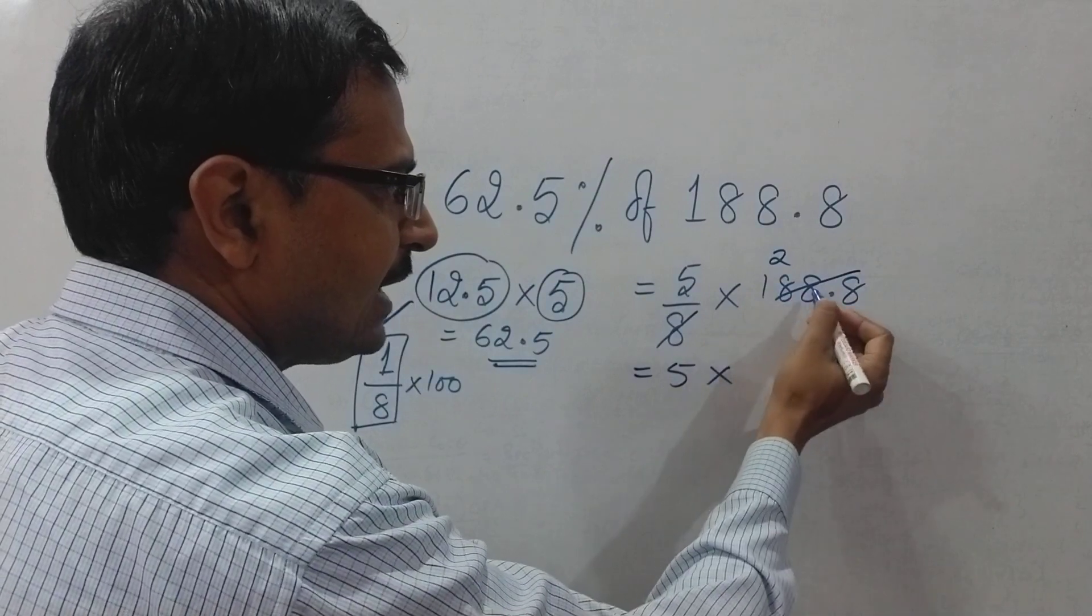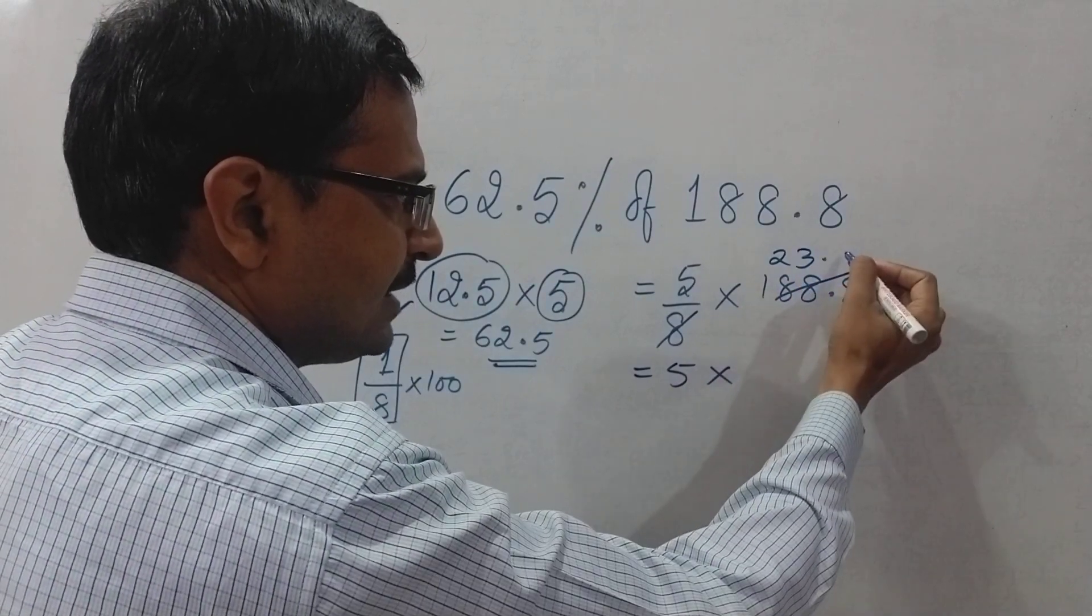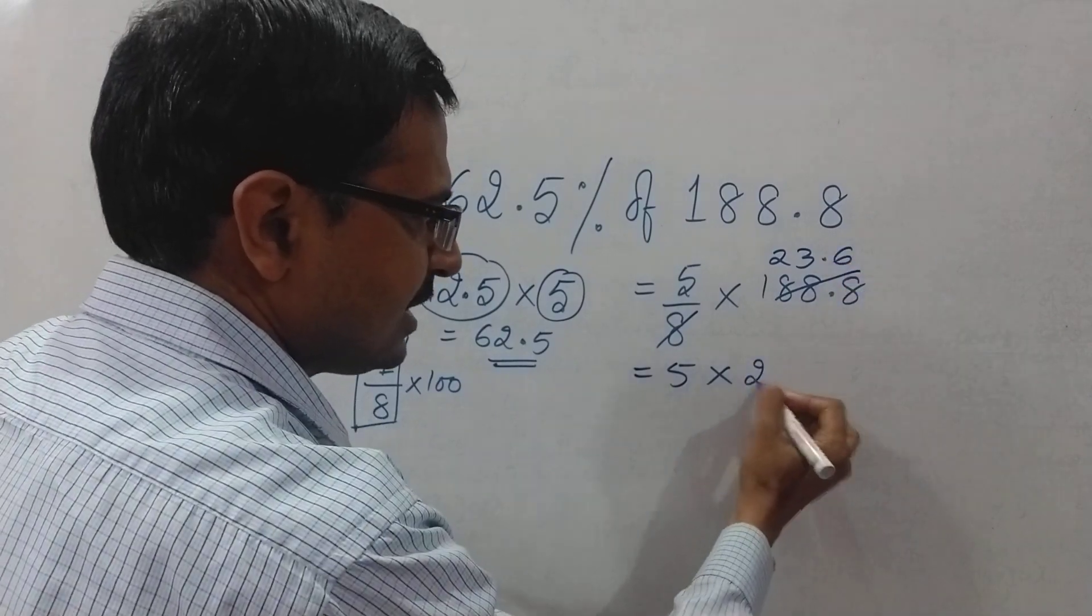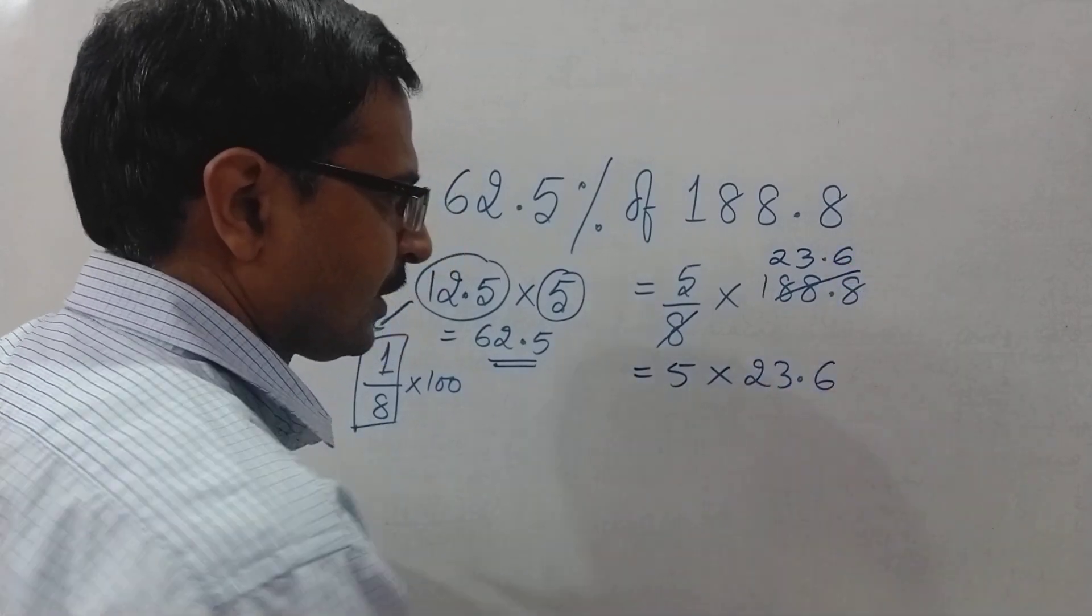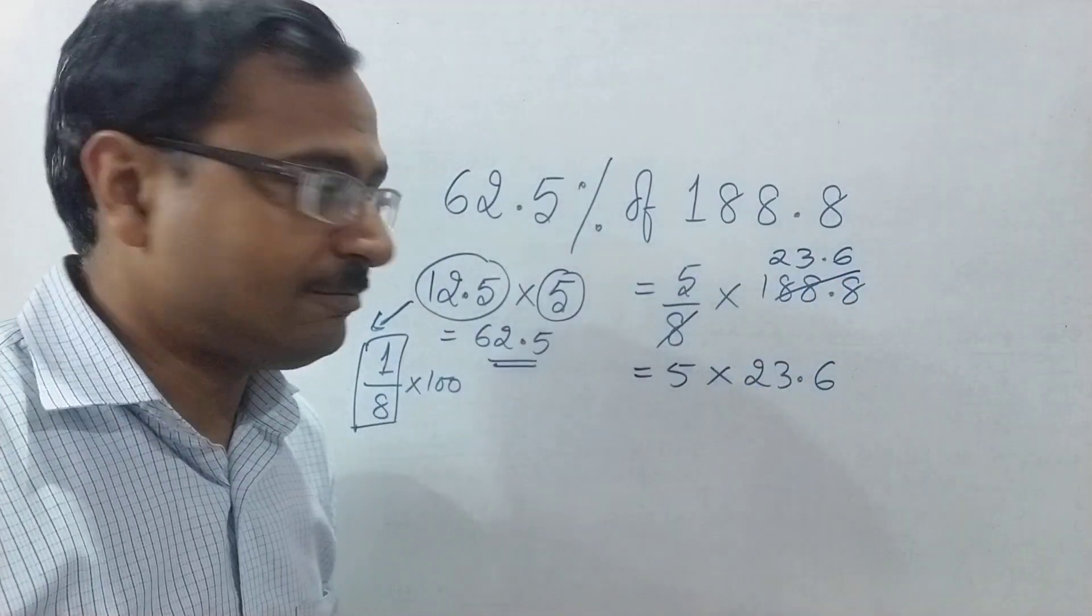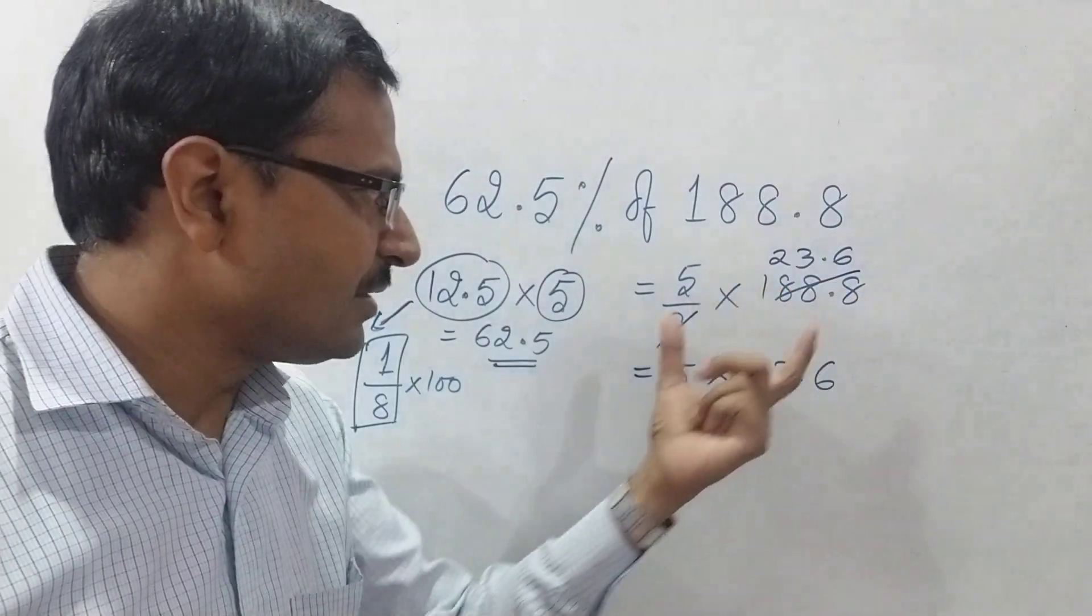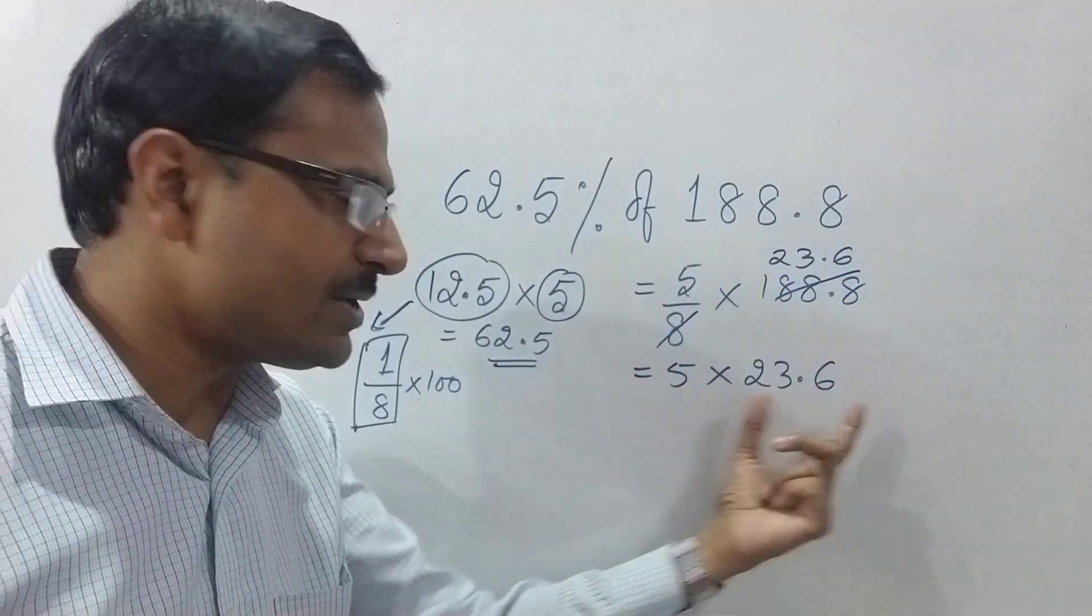...you can see 8 cancels - 8 to the 16 and 28 means 3, 4, 8, 48 means 8, 6 - so 23.6. Even if it does not cut exactly, you will have one more digit after the decimal, but here it is canceling exactly, so 23.6 is to be multiplied by 5.